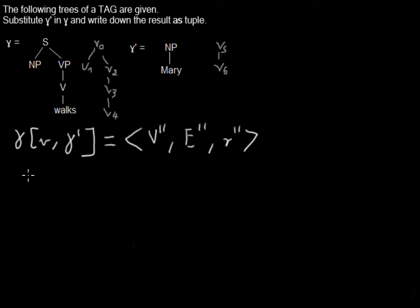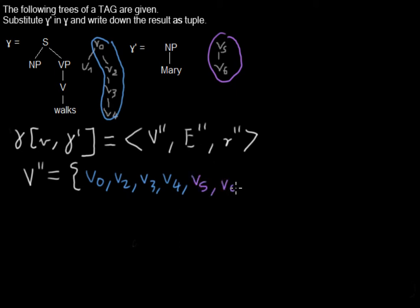So let's start with the new set of nodes. And into the set we are writing down all of these nodes that are the nodes without the one we are doing the substitution in. So it will be V0, V2, V3, V4. And then we join that with the nodes from the second tree, so V5 and V6. So that's it.